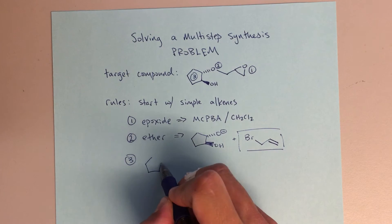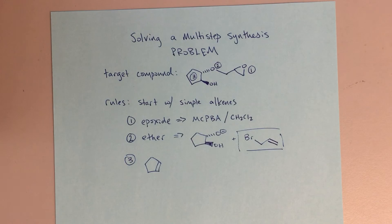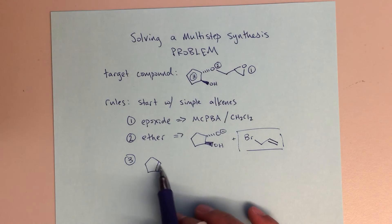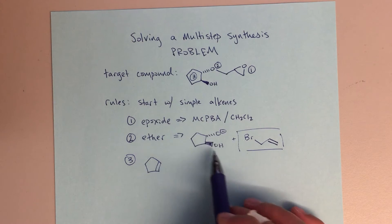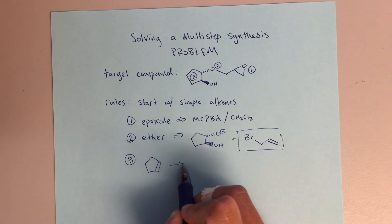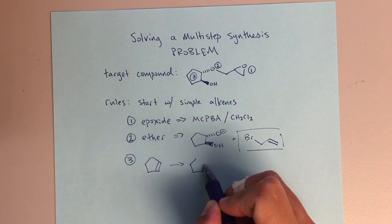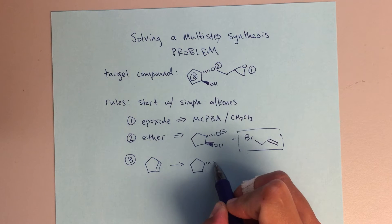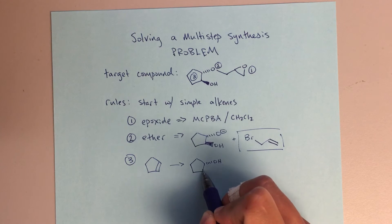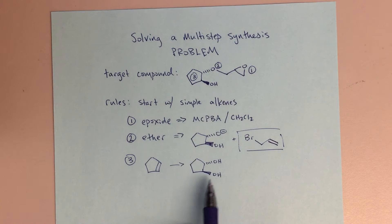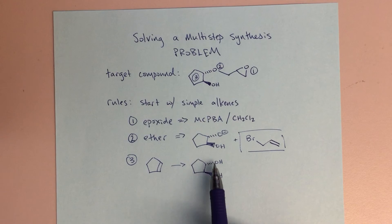Now really it's a matter of forming this alkoxide. How can we make that? We want to start from an alkene. Can we imagine starting from this cyclopentene to form something that looks similar to this?